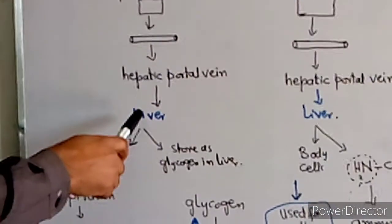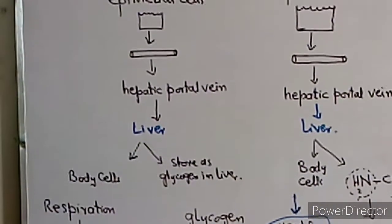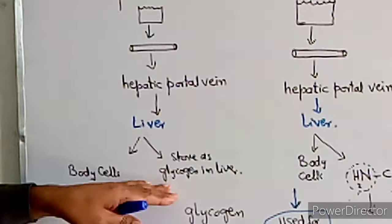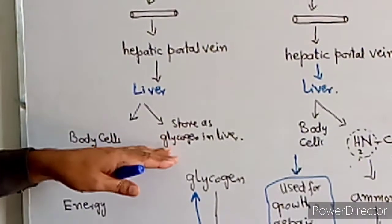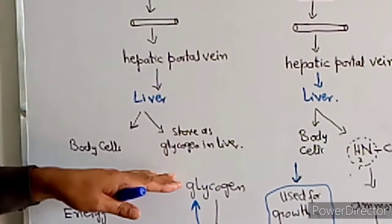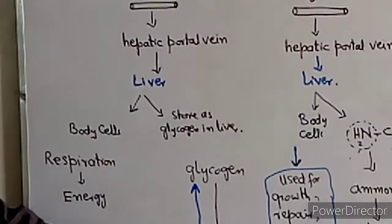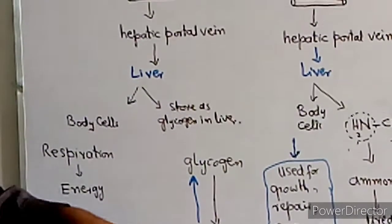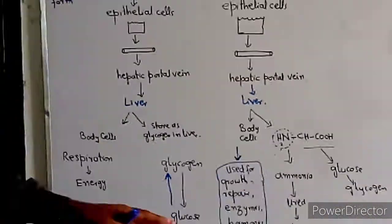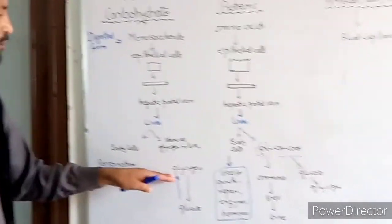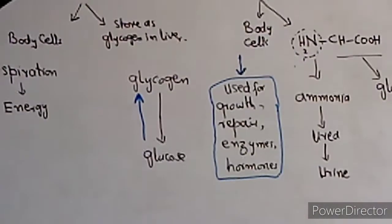If there is extra glucose or extra food, the cells can store it in the liver in glycogen form. When glucose in the blood is increased, it is converted and stored as glycogen in the liver.